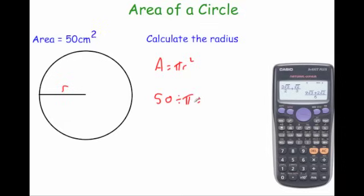And if we do 50 divided by pi, we get an answer of 15.915 and so on. I don't round that. So that's what the radius squared would be. So now we just need to square root that number.